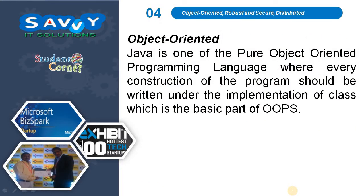The next feature is object-oriented. Java is a pure object-oriented programming language where every construction of the program must be written under the implementation of a class, which is the basic part of OOP. It supports all the concepts of object-oriented programming — class, object, data encapsulation, data abstraction, inheritance, polymorphism, dynamic binding, and message passing.